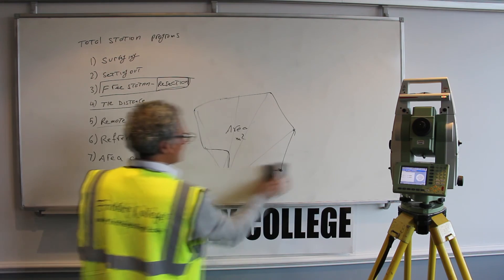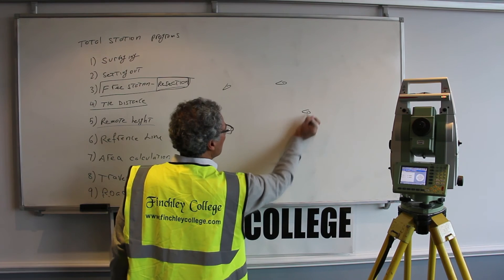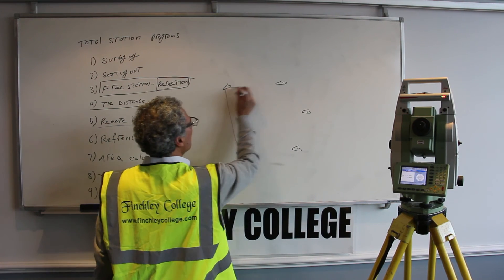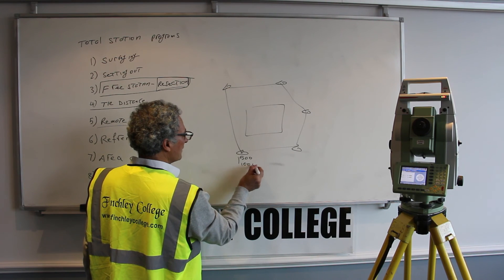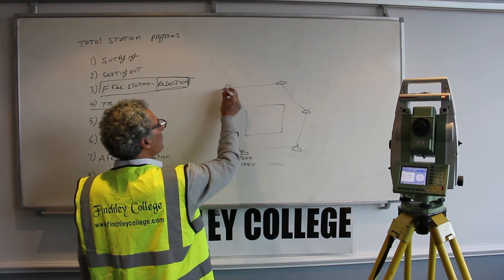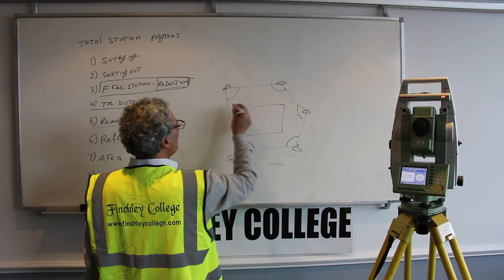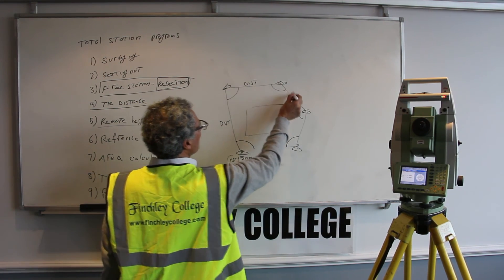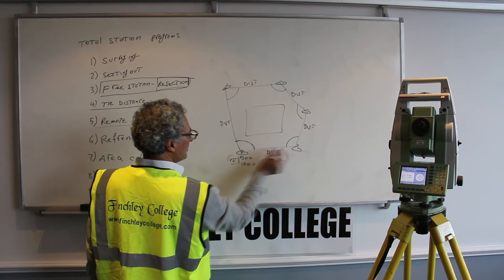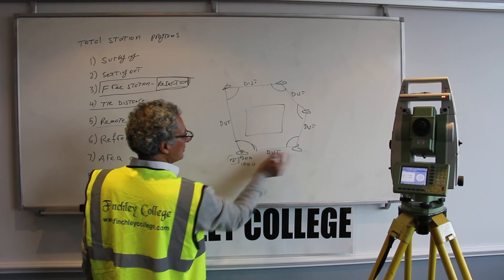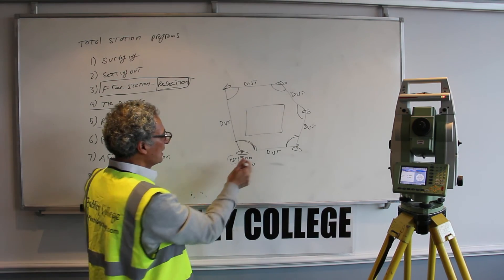The next program is the traverse program. You set up stations around the site and create a traverse. Starting with a known easting and northing — say 500 and 1000 — for your first point, you work out the coordinates for all other points based on the internal angles and the distances between each leg of the traverse. You measure the internal angles between each leg, set up at each station, sight to the next, read the internal angles, measure the distances, and feed this to the instrument, which will give you the coordinates.